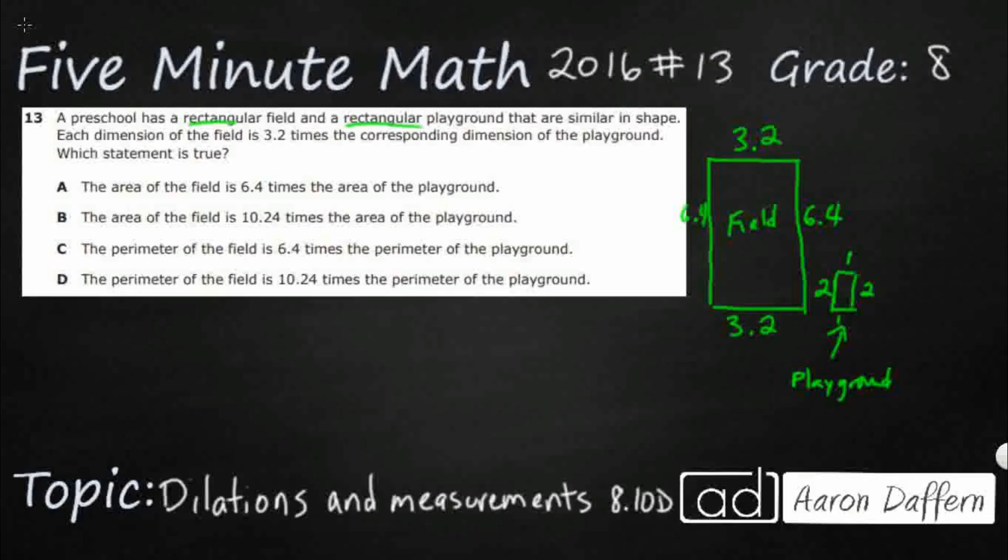So we need to compare the area and the perimeter of these two fields. So my area on my playground is just going to be 2 units squared. My perimeter is going to be 2, 4, 6 units.